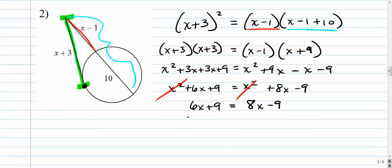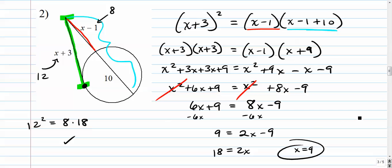So now let's solve that. We'll subtract 6x from both sides and then we'll add 9. We get 18 is 2x. x is 9. And I encourage you to plug that back in here. You get 9 plus 3 is 12. Back in here, you get 9 minus 1 is 8. So 12 squared should equal 8 times 18. And it does.